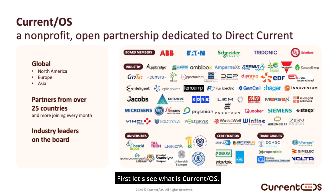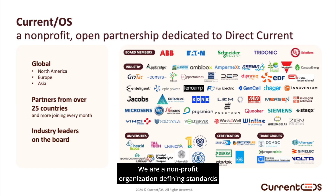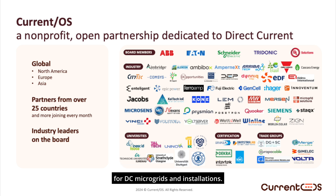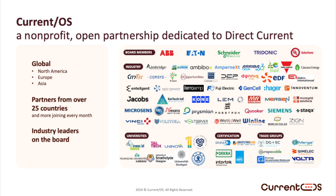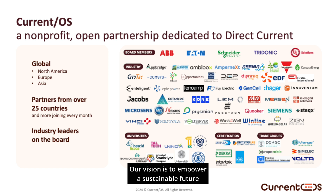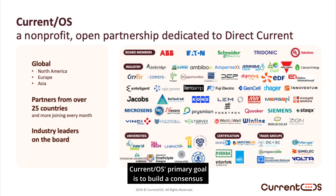First, let's see what Current OS is. We are a non-profit organization defining standards for DC microgrids and installations. Our vision is to empower a sustainable future by enabling reliable electricity access for all. Current OS's primary goal is to build a consensus for shared DC electrical rules among our partners.